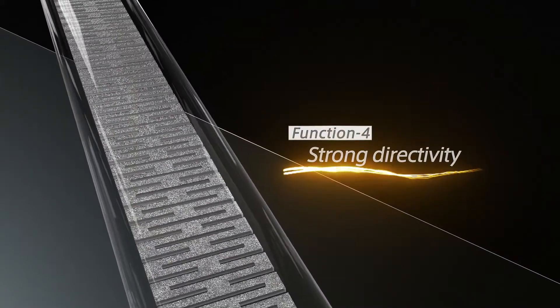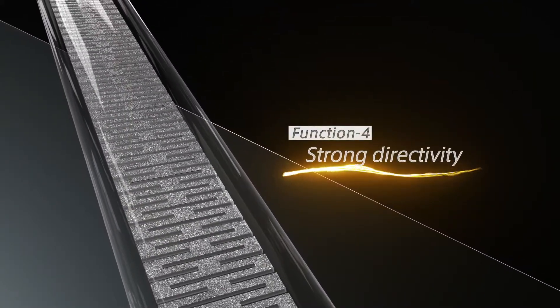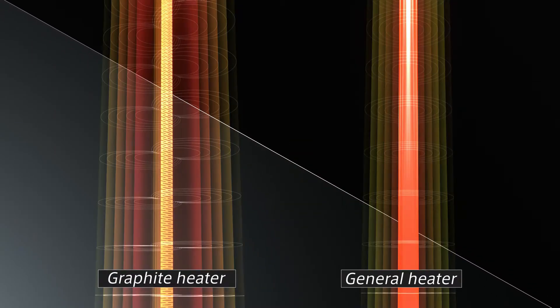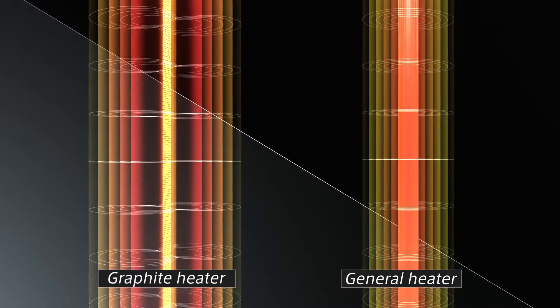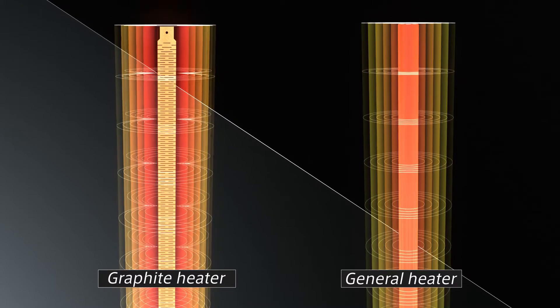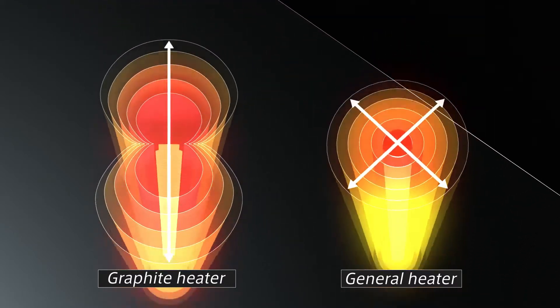Function 4: Strong directivity. Unlike a general round heater, the cross section of a graphite heater emitting surface is flat, making it possible to control the direction in which heat is radiated and concentrated in two directions.